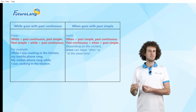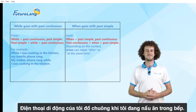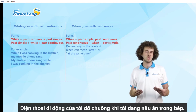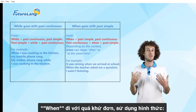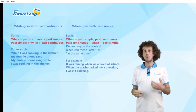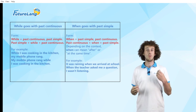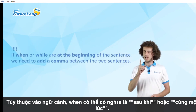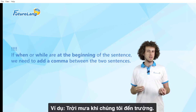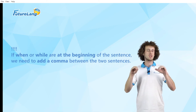When goes with the past simple. Depending on the context, 'when' can mean 'after' or 'at the same time.' For example: 'It was raining when we arrived at school.' Or, 'When the teacher asked me a question, I wasn't listening.' Pay attention: if 'when' or 'while' are at the beginning of the sentence, we need to put a comma between the two clauses.